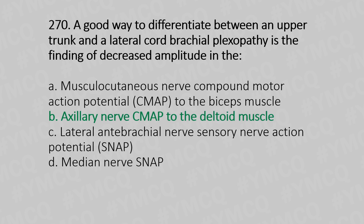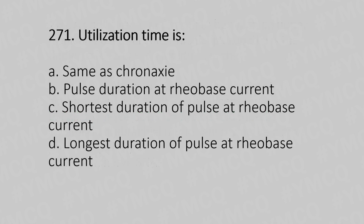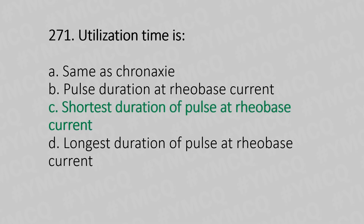Now let's move to question number 271. Utilization time is: Option A, same as chronaxie; Option B, pulse duration at rheobase current; Option C, shortest duration of the pulse at the rheobase current; Option D, long duration of the pulse at the rheobase current. And the answer is Option C, shortest duration of the pulse at the rheobase current.